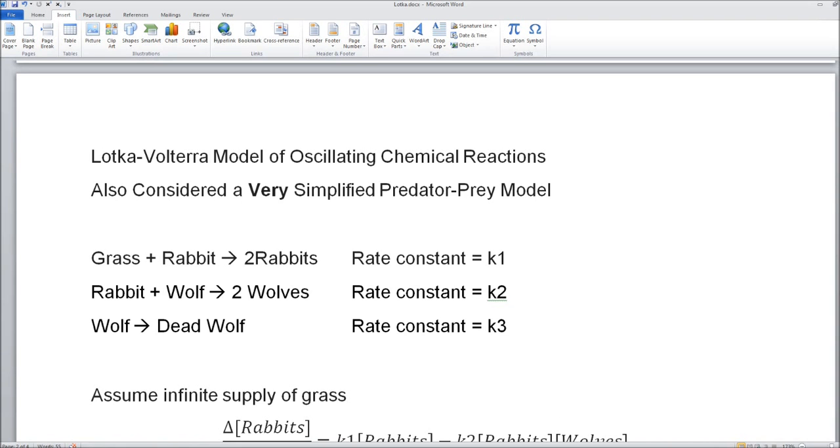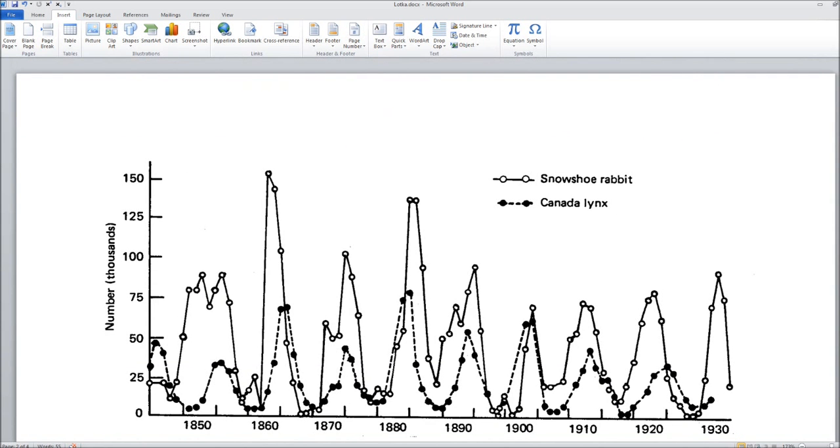It is known that very often predator-prey show oscillating behavior in their population versus time. Here we have something I got off the web. It shows the population of the snowshoe rabbit and the Canada lynx, which are predator and prey. You can see there's an oscillation and the population of one goes up and following that, the population of the predator goes up and back and forth.